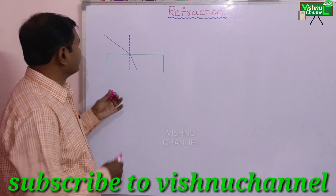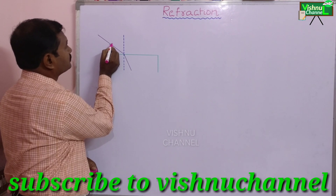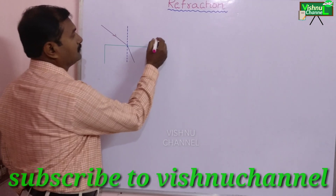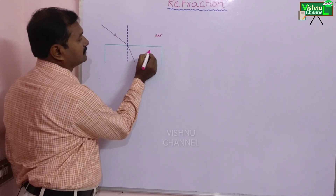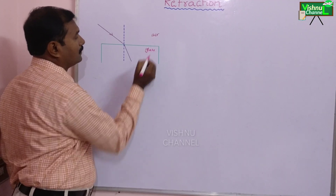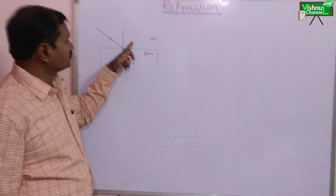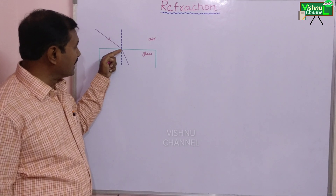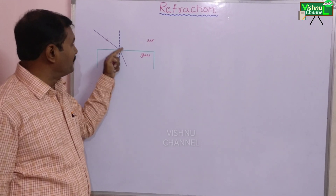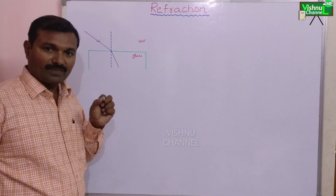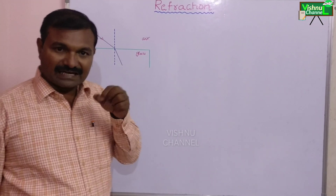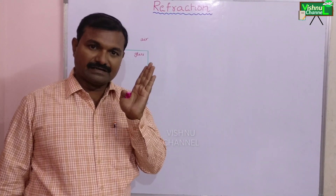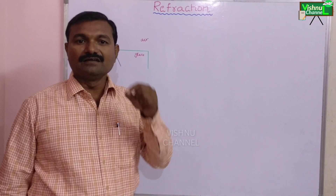Observe here. Let this be the light ray. The light ray enters from one medium to another medium — let this is air and this is glass. So here the light ray enters from air to glass, at the separation of the two media. It bends and enters into glass. So this bending property of light is called refraction. Refraction means if a light ray enters from one medium to another medium at the separation of two media, it bends — this bending property of light is called refraction.